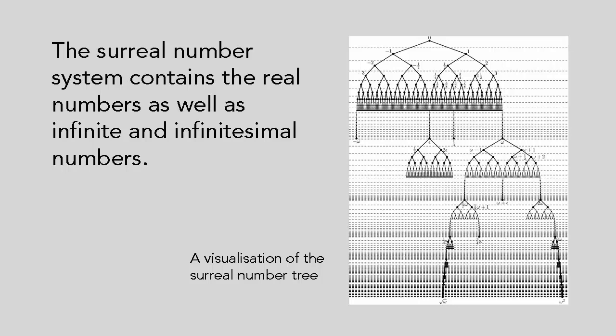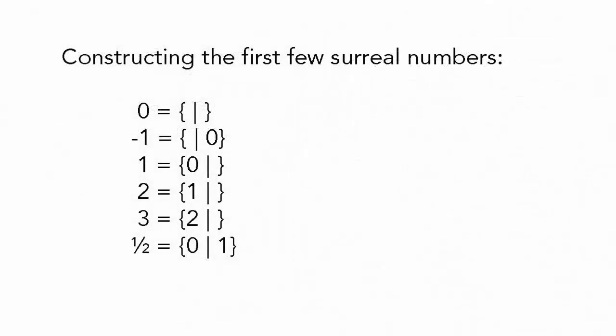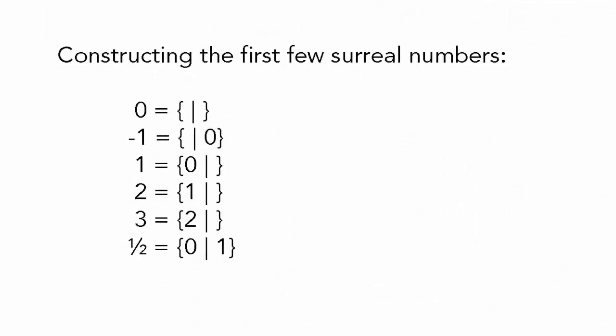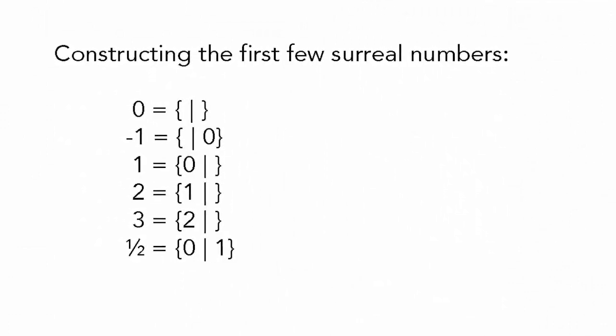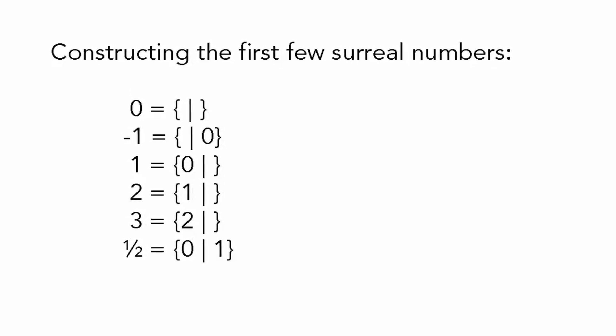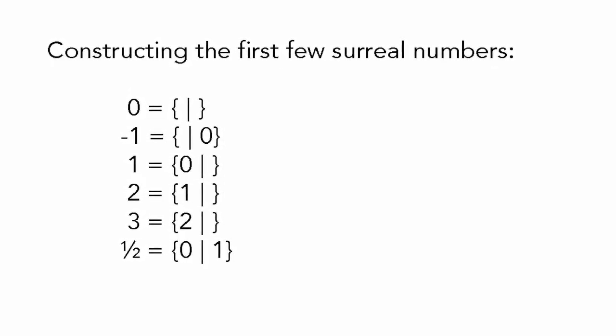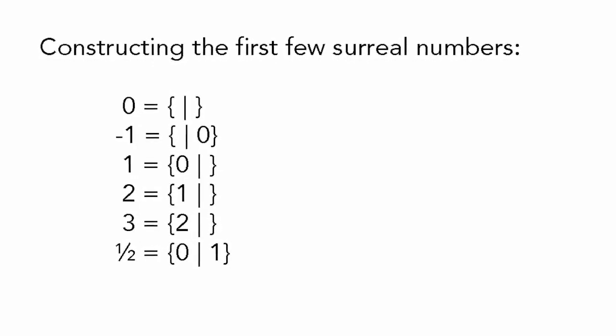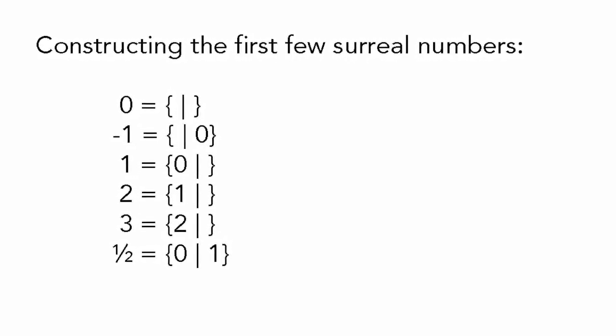We can generate the whole, inconceivably vast universe of the surreals, effectively out of thin air. To construct the first one, both L and R must be the empty set, the set that contains no members. This gives us the surreal number, which corresponds to zero. With zero in place, it can be used in the sets L and R to produce more surreals.